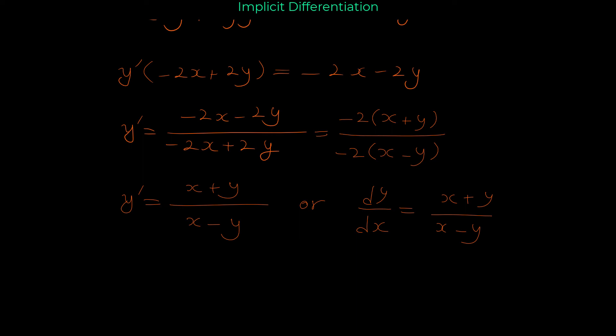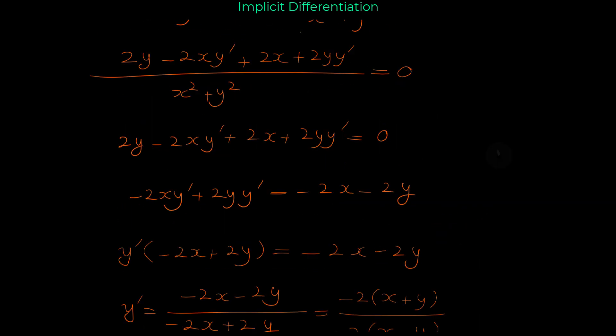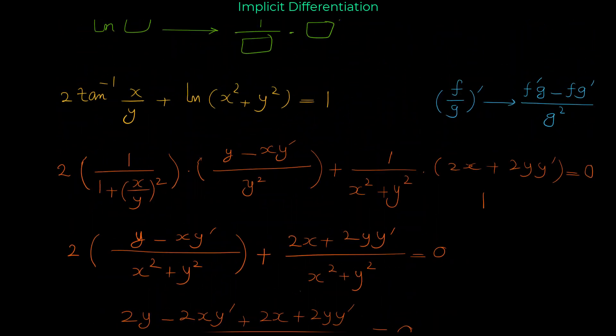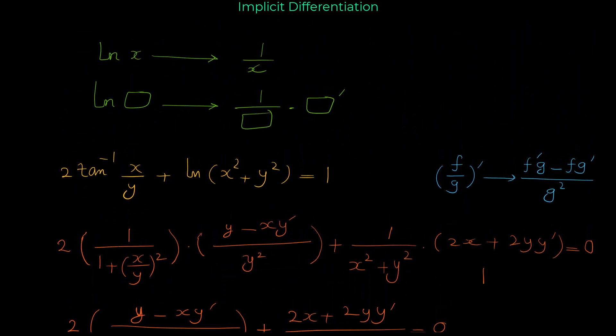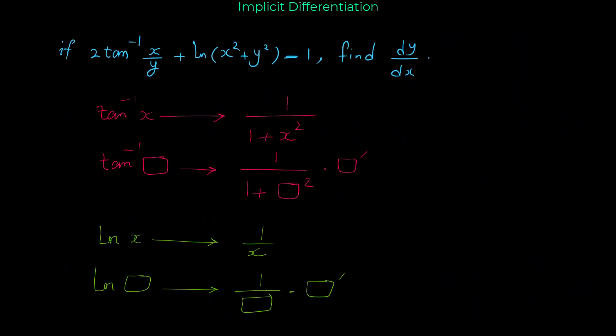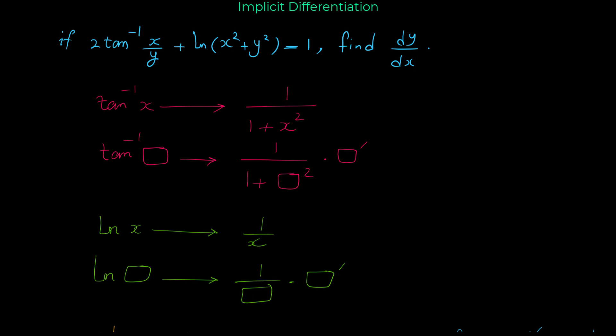So dy over dx equals x plus y over x minus y, and this is the derivative of this implicit relation. I hope you liked this video and see you in the next videos.